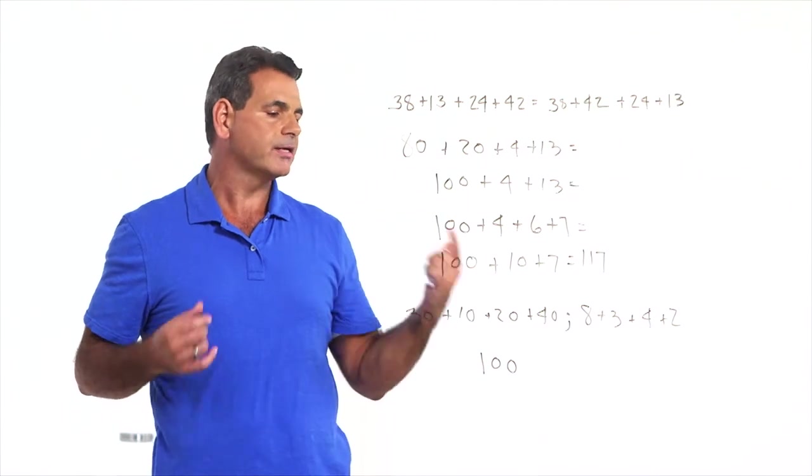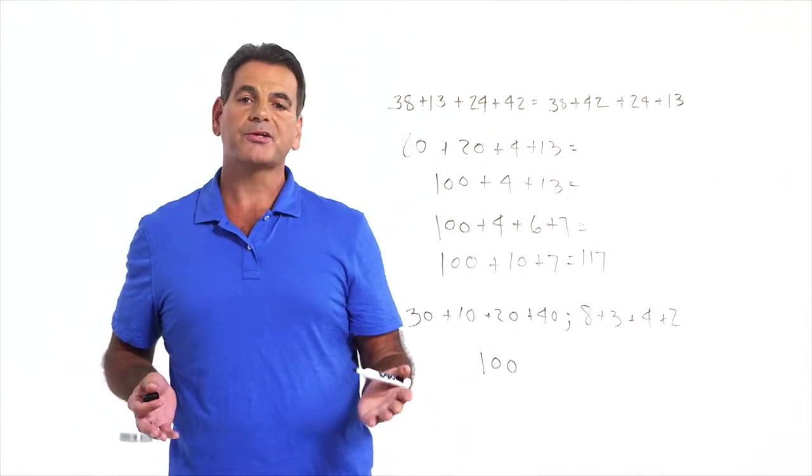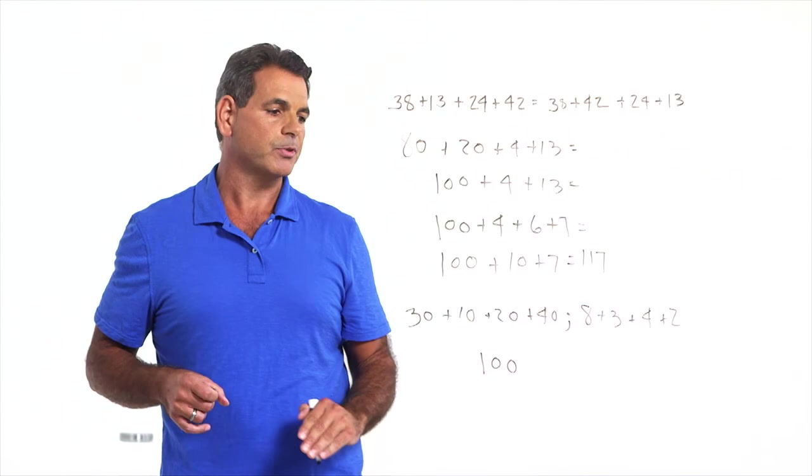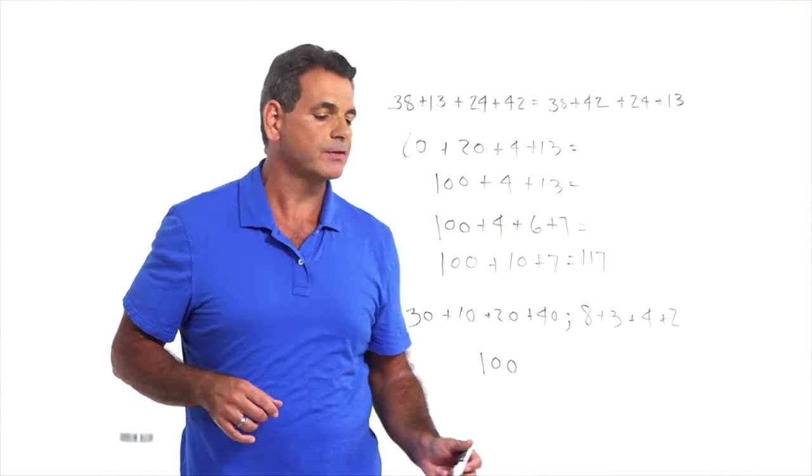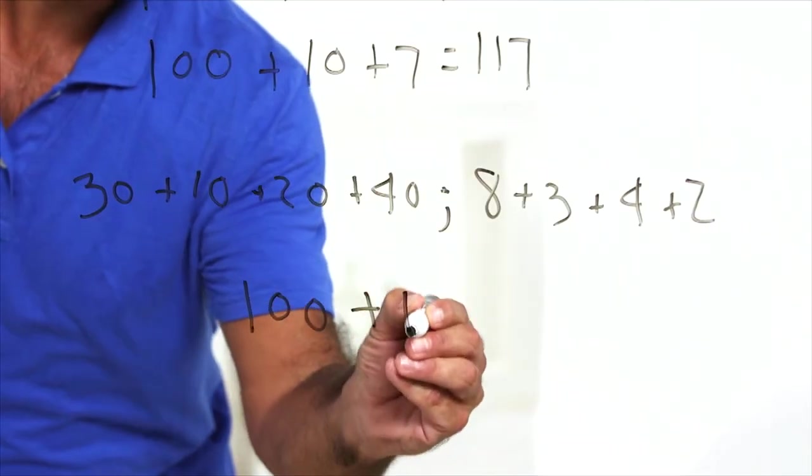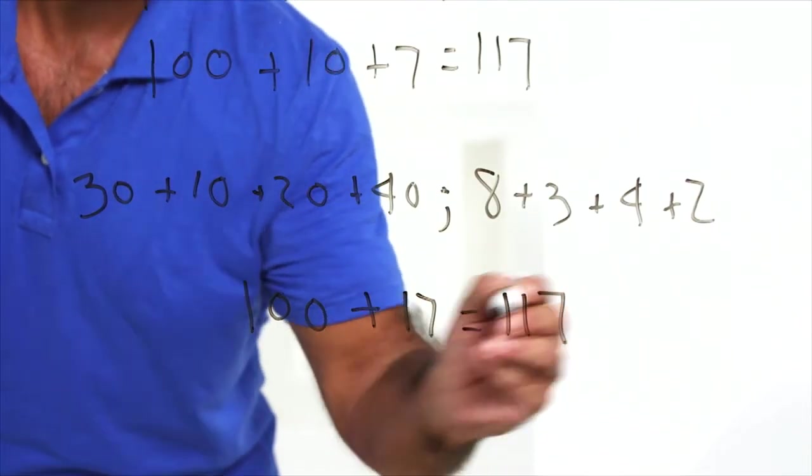3 tens plus 1 ten is 4 tens. 4 tens plus 2 tens is 6 tens. 6 tens plus 4 tens is 10 tens is 100. Now, let's look at our 1s. 8 plus 3 plus 4 plus 2. And students can do that in many ways. They can count on with their fingers. They can decompose. There are many strategies they can use to add their single digit numbers. But we get 8 plus 3 is 11, 11 and 4 is 15, 15 plus 2 is 17. We get 100 plus 17 equals 117.